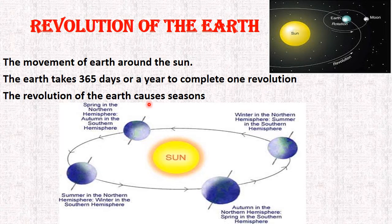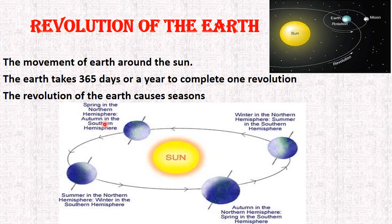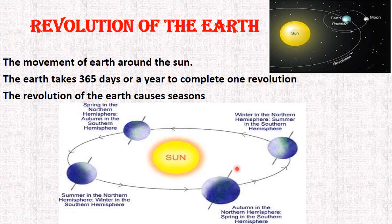The revolution of the earth causes seasons — the different seasons we experience like summer, winter and autumn are due to the revolution of the earth around the sun. In the second picture you can see the sun and four different positions of the earth. In the first position, there is spring in the northern hemisphere and autumn in the southern hemisphere. In the second position, summer in the northern hemisphere because it is directly facing the sun, and winter in the southern hemisphere. In the third position, winter in the northern hemisphere and summer in the southern hemisphere. In the fourth position, autumn in the northern hemisphere and spring in the southern hemisphere.